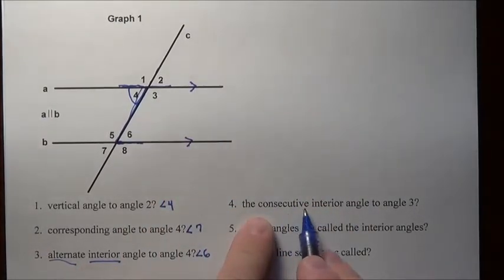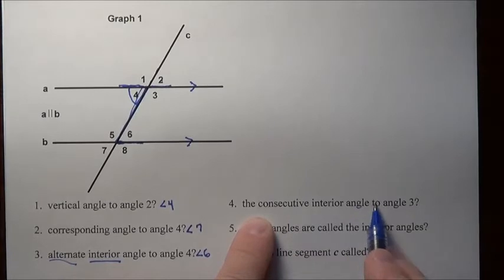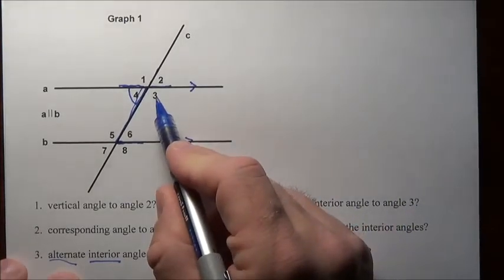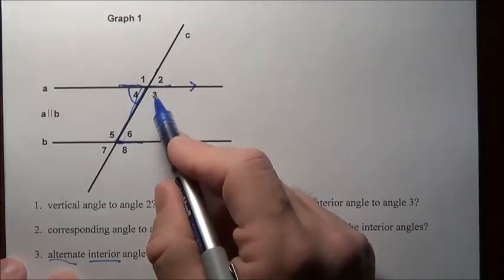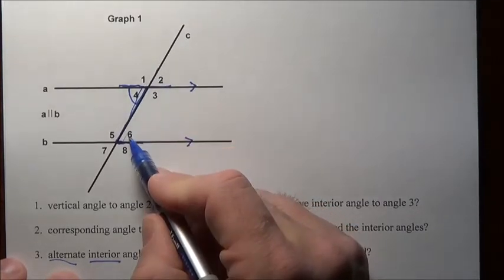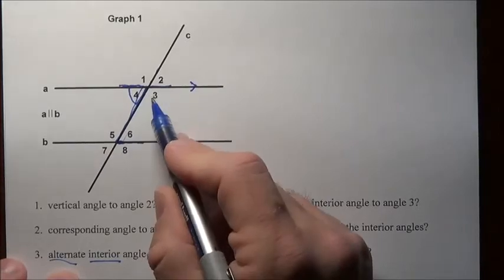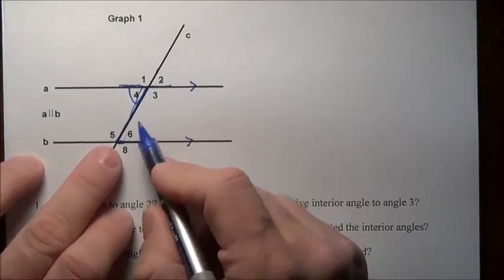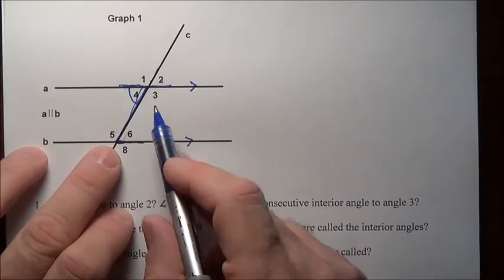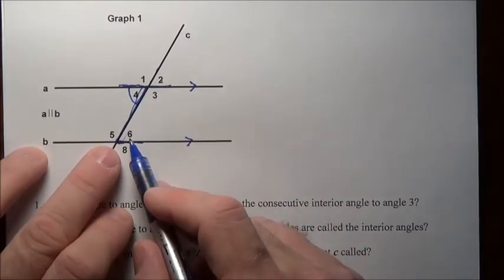Question four. It says the consecutive interior angle to angle three. So here's angle three. Consecutive means one right after the other. And as we slide down this transversal, here's this guy and then here's this guy. These are consecutive interior angles. They're on the same side of the transversal. Some books actually refer to them as interior angles on the same side of a transversal.